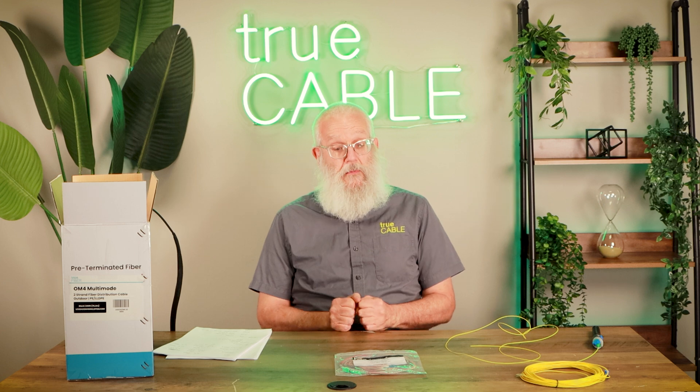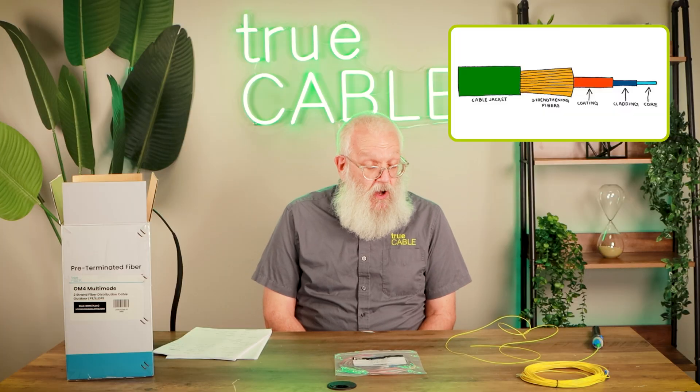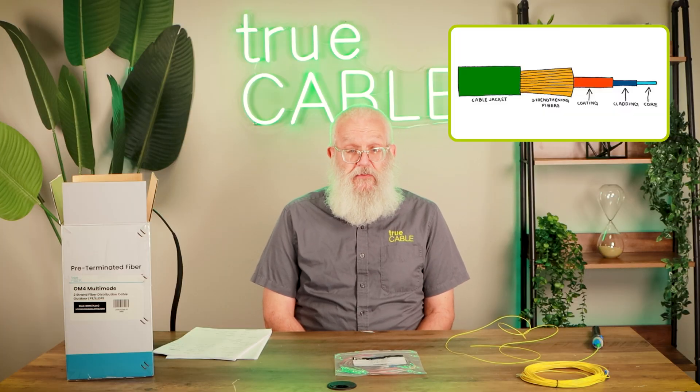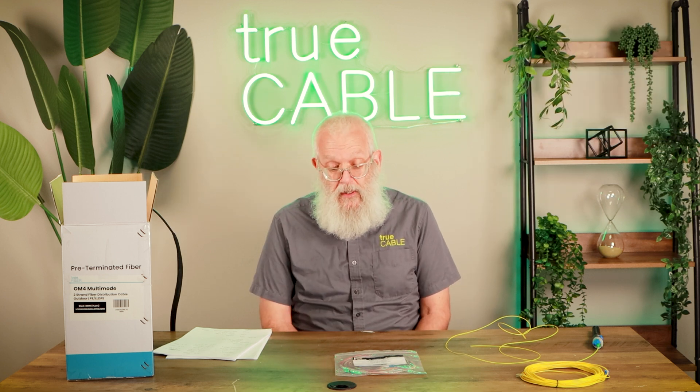To begin with, where all the magic happens is right in the center of the cable with a glass conductor. It's very small — up to 50 micrometers, also known as microns, in diameter. If you're wondering what a micron is, it's one thousandth of a millimeter. So you can't see it with your eye — it's really small. That's where the light goes through, but we have to keep the light in there.